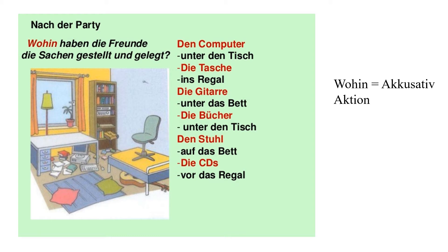Und nach der Party — jetzt sieht das Zimmer ganz anders aus. Die Freunde haben die Sachen irgendwo hingestellt. Wohin haben die Freunde die Sachen gestellt und gelegt? Den Computer — die Freunde haben den Computer unter den Tisch gelegt. Wohin haben die Freunde die Tasche gestellt? Die Tasche ist ins Regal — in das Regal. Regal has the article das, which has no change in Akkusativ. The short form we use is ins Regal — it is in das Regal. Wohin is the question word which shows you Akkusativ case, which is always an action. When an action is performed, we use Akkusativ.